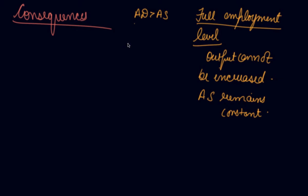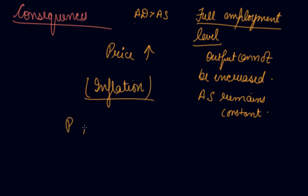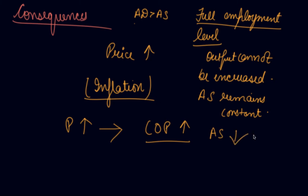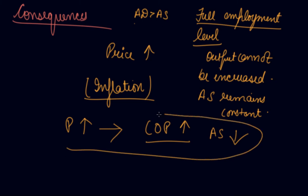Your aggregate supply remains constant, and if aggregate supply remains constant and demand is more, it puts pressure on goods and services and excess demand on the existing output. So what happens — your price of the existing output increases. Excess pressure on the demand of existing output causes a rise in price, this is inflation. If your price rises, it again causes an increase in the cost of production, and aggregate supply will be less. So this is again an inflationary cycle.